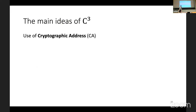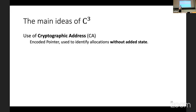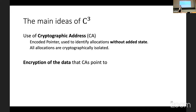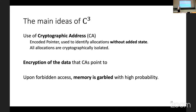The main ideas of C-cubed are: first, the use of cryptographic addresses — encoded pointers used to identify allocations without added state. Second, all memory allocations are cryptographically isolated, meaning every part of memory containing different data has a different cryptographic address. Third, the data that cryptographic addresses point to is encrypted as well. And when there's a forbidden access, the memory is garbled — meaning that when a memory safety vulnerability happens, the data is not usable anymore.